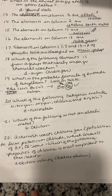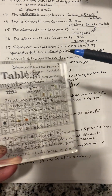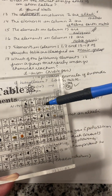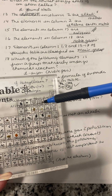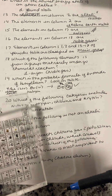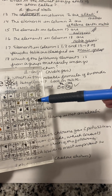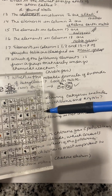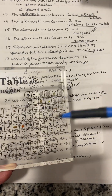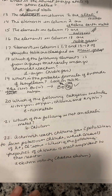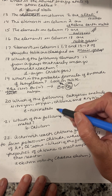Which of the following categories includes nitrogen, oxygen, chlorine, and krypton? Looking at the periodic table, nitrogen, oxygen, chlorine, and krypton are all over on the right side. The metals are on the left side, and the non-metals are on the right side. So they are all non-metals.